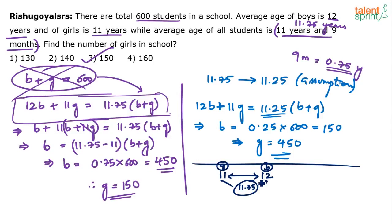Out of the gap of one unit between 11 and 12, the overall average is 0.75 towards boys. That means 75% of the students are boys. So out of 600 students, 75%, which is 450, are boys. The remaining 150 are girls.